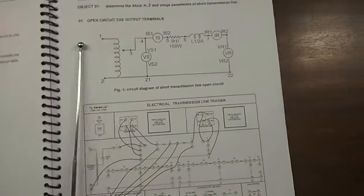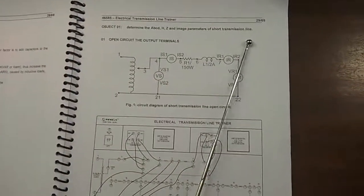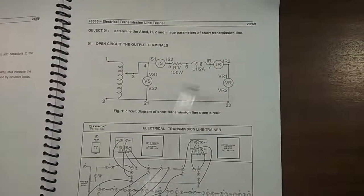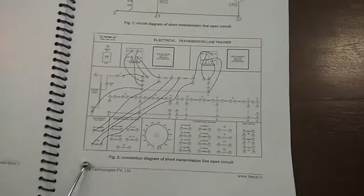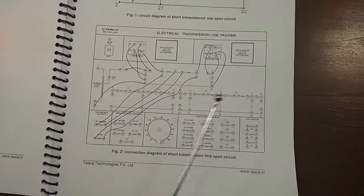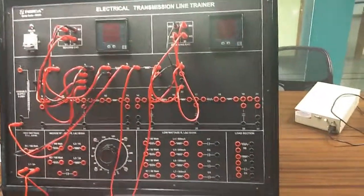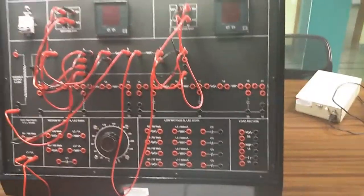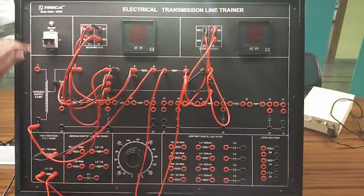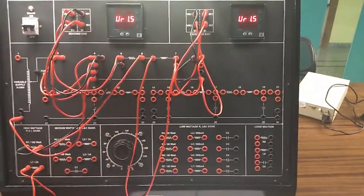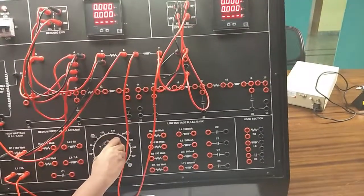Our first experiment is to determine the A, B, C, D and image parameters of a short transmission line. In this first experiment, we will do the open circuit output terminal test. This is the connection for this experiment. We have built the connection exactly like the figure. First, I am turning on the main switch. Now set the variac to 110 volts.